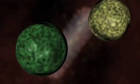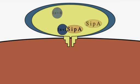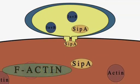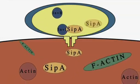Via this type 3 secretion system, Salmonella typhimurium injects a whole cocktail of toxins, the effector proteins SipA, SopE and SopE2, into the intestinal cell.